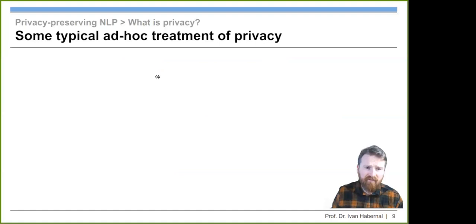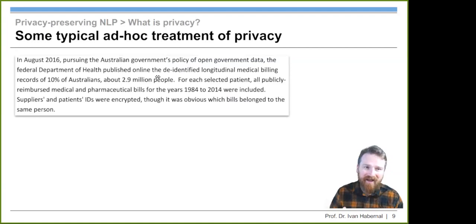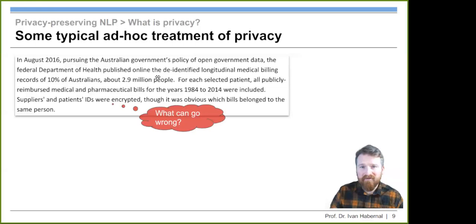Unfortunately, this is so common that we should really talk about it. This is an ad hoc treatment of privacy. Here's an example. In 2016, the Austrian government tried to open their data and they released medical billing records of 10% of Australians, about 3 million people. Each patient was somehow anonymized. The patient IDs were encrypted, which means replaced by a random ID, but it was obvious which bill of the medications belonged to which person. They tried to anonymize the data in this simple way.